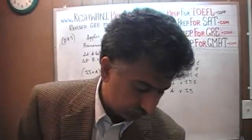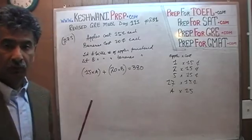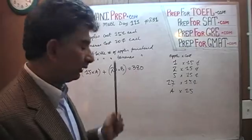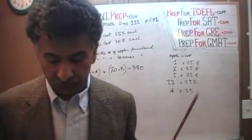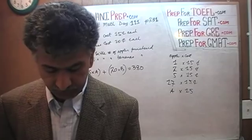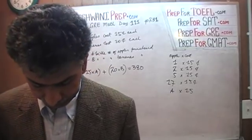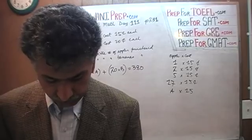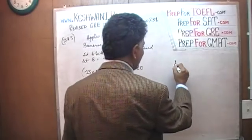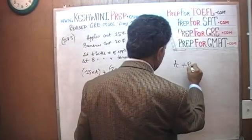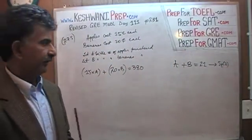Since there are two unknowns — A and B — we need two independent equations to solve for them. This is only one equation, so there must be another equation buried in the problem. The problem goes on to say: if the bag contains 21 pieces of fruit, the number of apples plus bananas must equal 21. That is our second equation: A + B = 21.